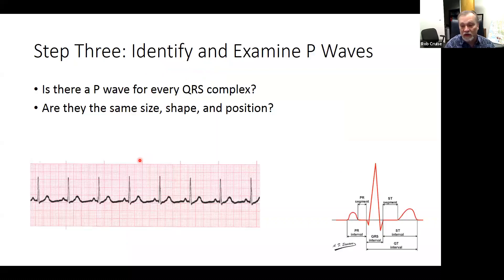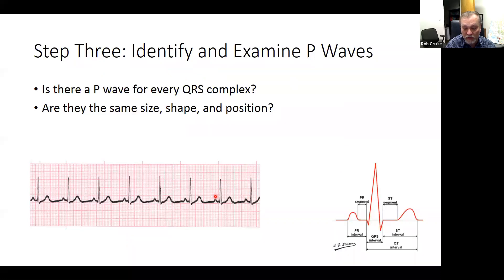Step three: identify and examine the P waves. Before each QRS complex, is there a P wave? Looking across the strip — P wave here, P wave here, P wave here — yes, yes, yes, yes, and yes. So we have P waves, and we check that off on our list.